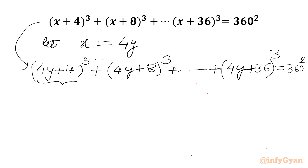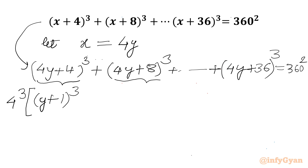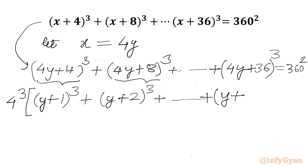Now I will take 4 common from each bracket, so it will come out as 4³ overall. In the brackets I can write (y+1)³ + (y+2)³ + ... + (y+9)³. The RHS is 360². Now 4³ can also be written as 8², since both equal 64.